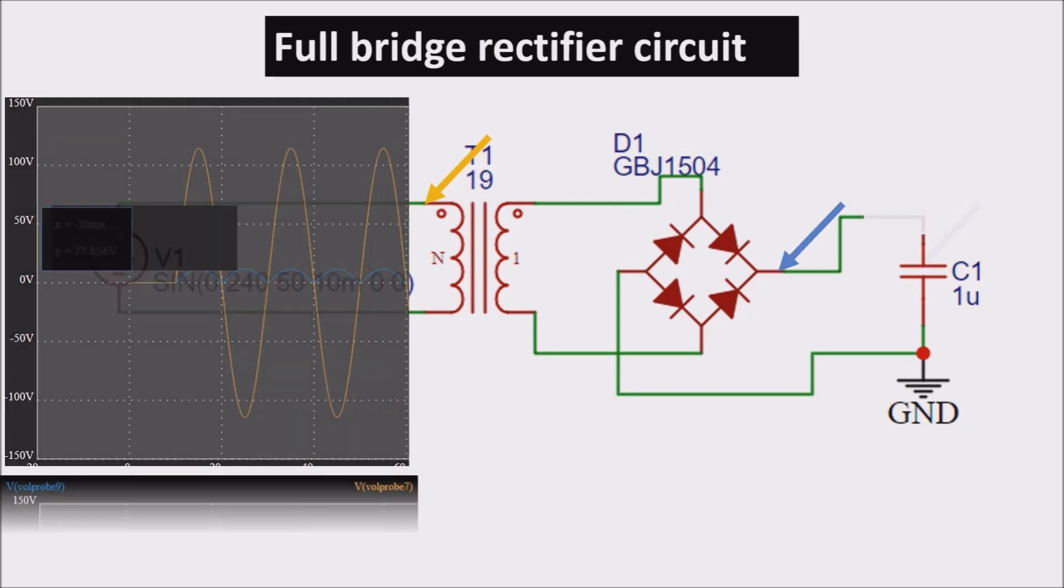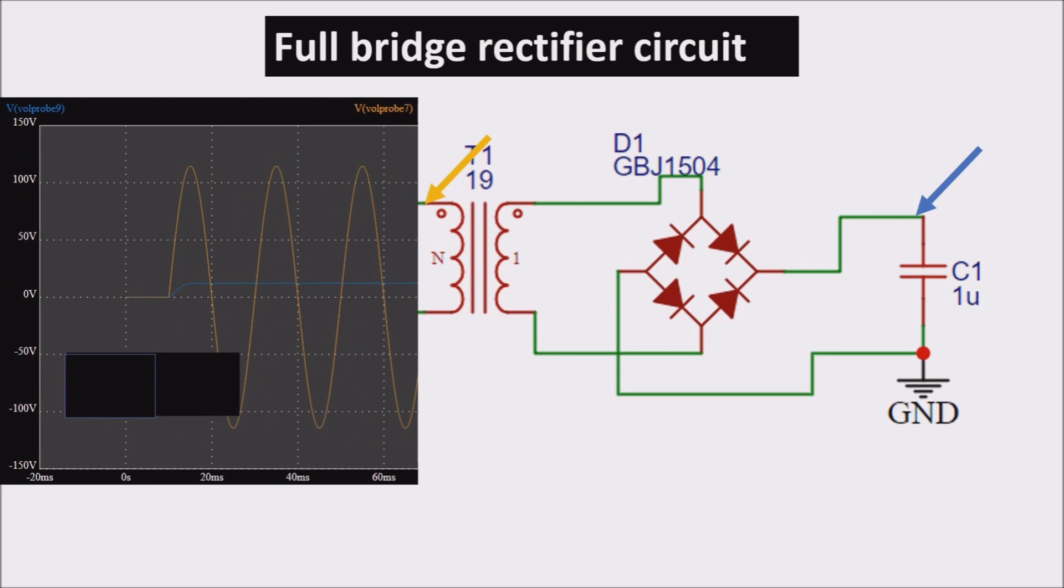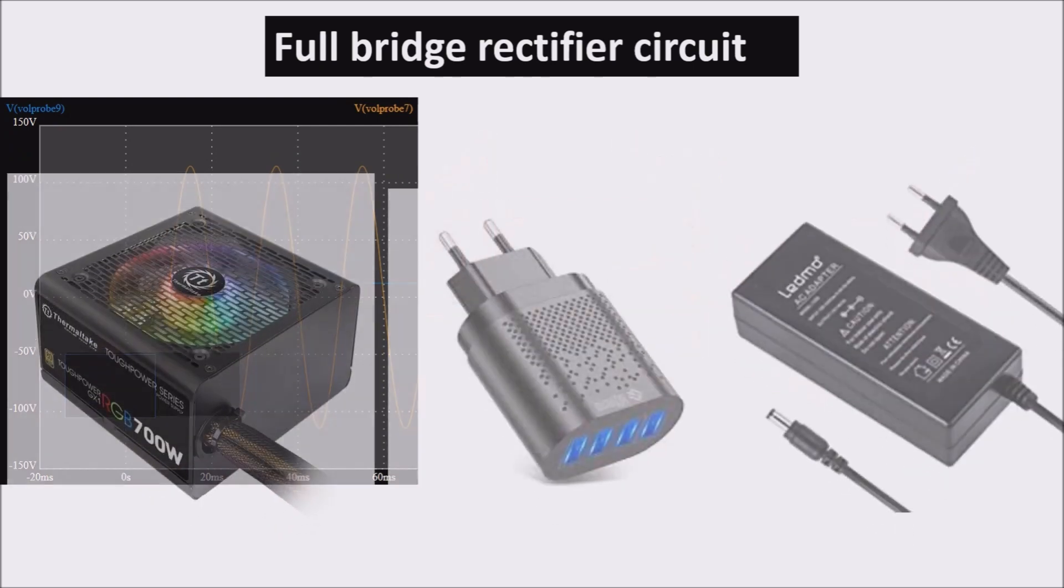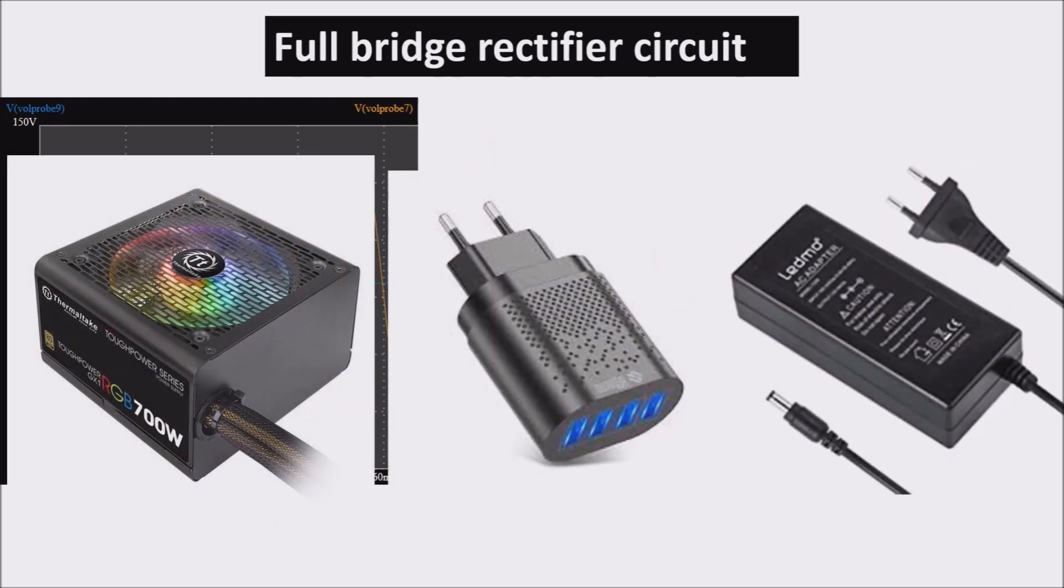Eventually, adding the capacitor, we have this stable blue line, which is our DC voltage. This is the circuit you can find in all the power supplies you need for your electronic devices.